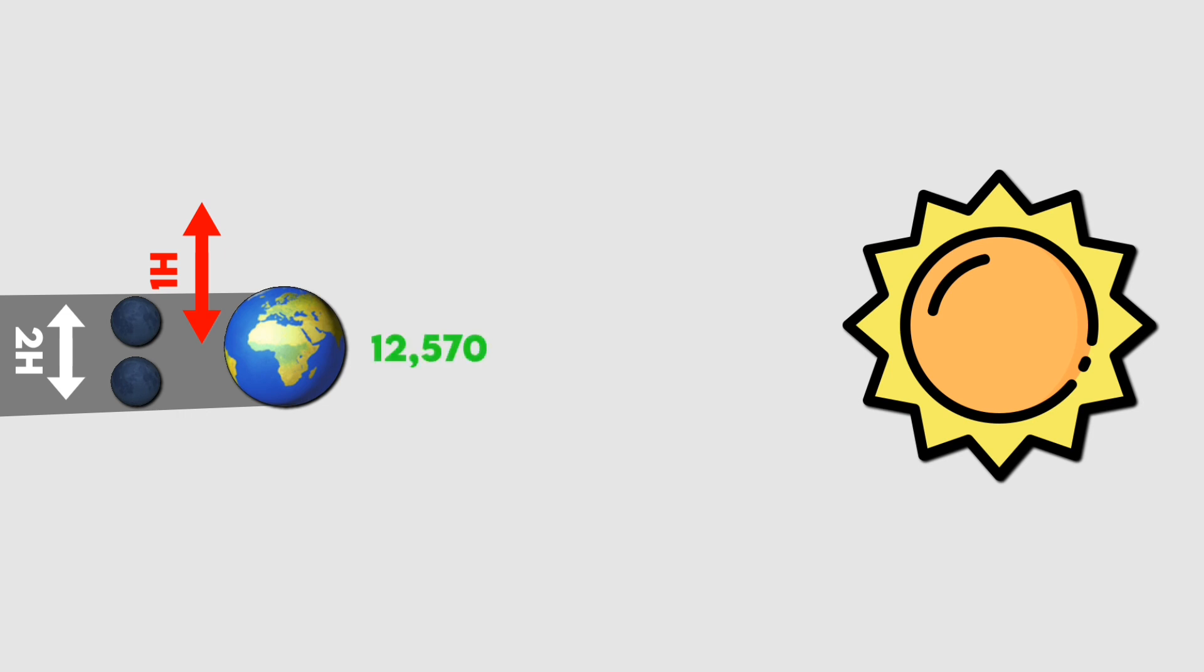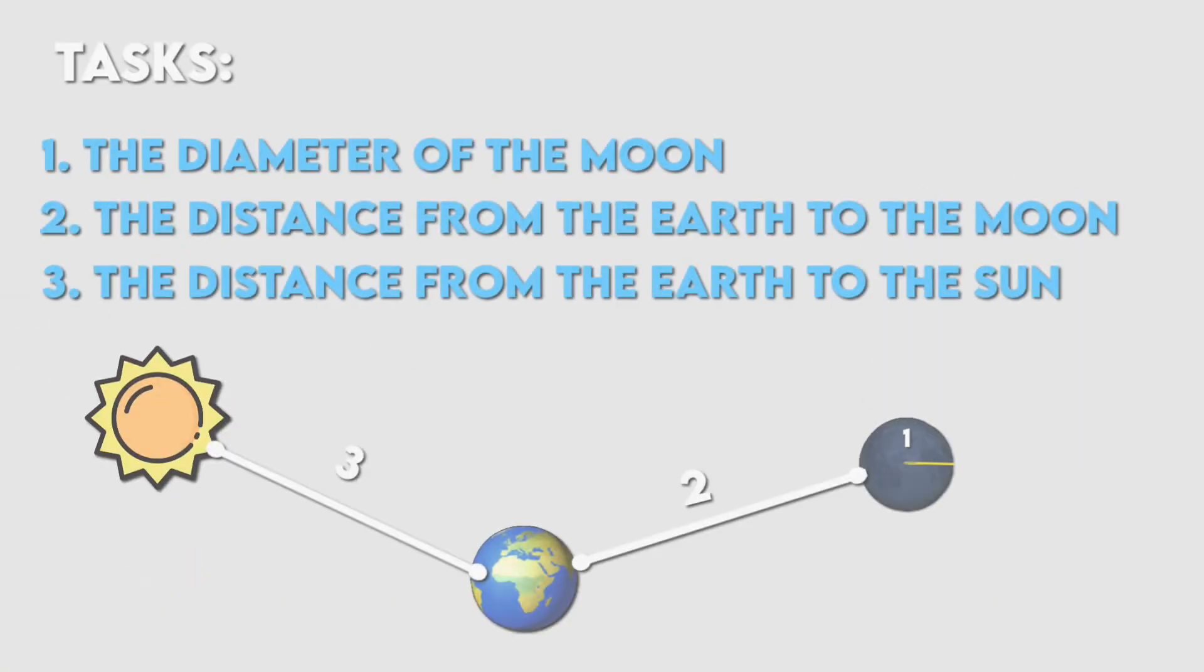Using Eratosthenes' calculation of the Earth's diameter, Aristarchus estimated that the moon's diameter was about 6,285 kilometers. With this, he completed the first task.